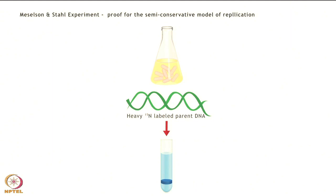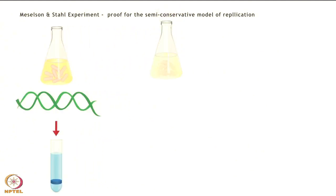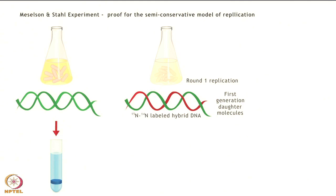For this, they grew E. coli cultures for several generations in N15 containing medium so that the bases in DNA contained N15 instead of N14. Next, they transferred and grew the cultures for several generations in an N14 containing medium. Throughout the period of growth, samples were taken, cells lysed, and the DNA analyzed by centrifugation in CsCl gradient.